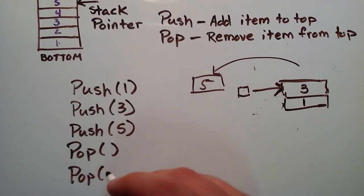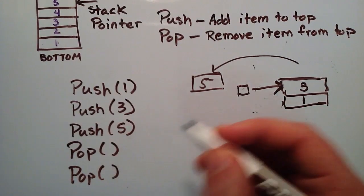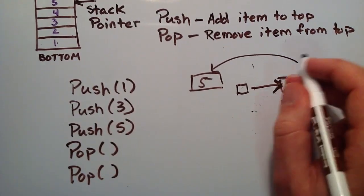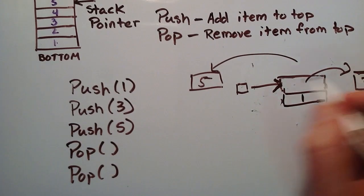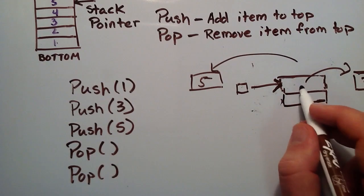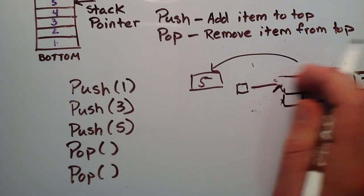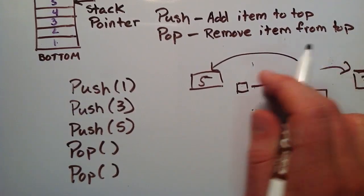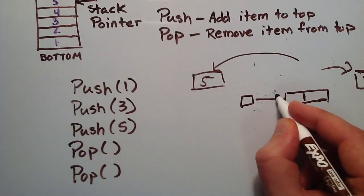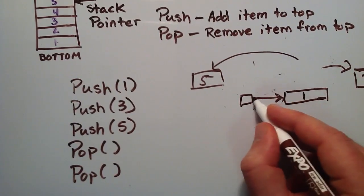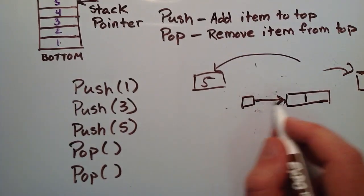One more pop would basically remove 3, send it to some part of our program depending on how we wrote our pop function. It would put 3 in a certain location and then we would just go ahead and move our stack pointer back down to the location below the top and now this is the new top.